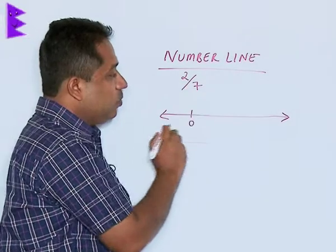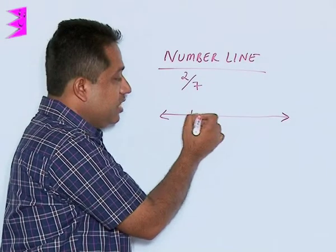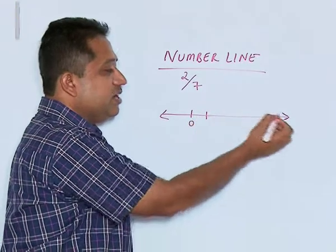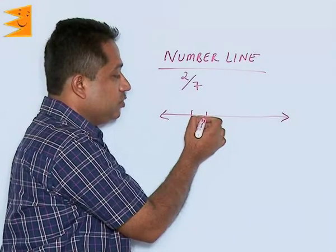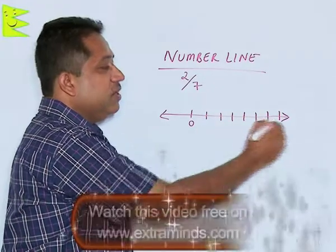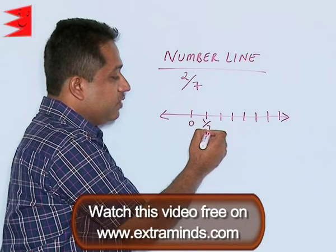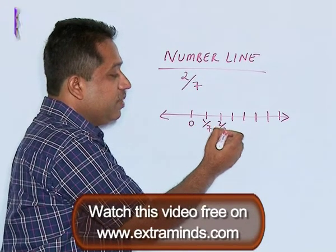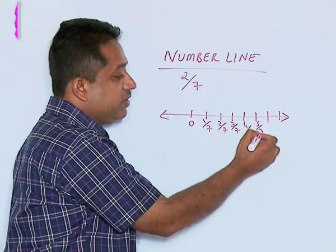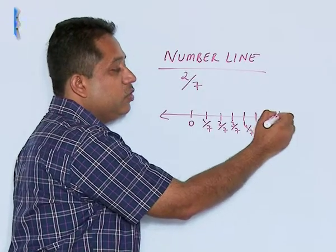For 2 by 7, we make equal divisions. This one unit between 0 and 1 has to be divided into 7 equal parts. So we mark 7 equal divisions, labeling them as 1 by 7, 2 by 7, 3 by 7, 4 by 7, 5 by 7, 6 by 7, and 7 by 7 which is equivalent to 1.